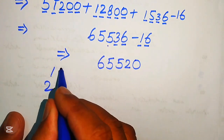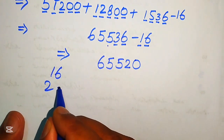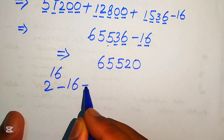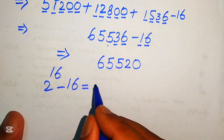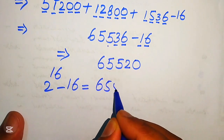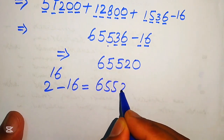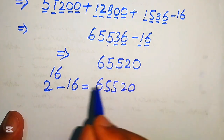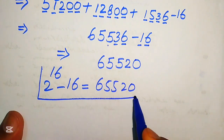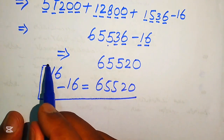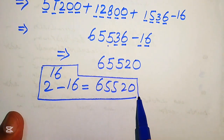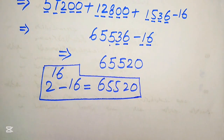Finally, the answer is that 2 to the power of 16 minus 16 equals 65,520. This is the final simplified form of the given expression. Thank you so much for watching this video — please subscribe to my channel for more exciting videos.